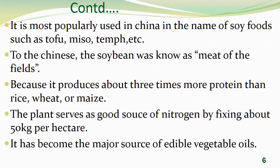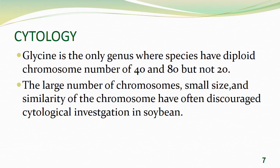Soybean has become a major source of edible vegetable oil. Coming to the cytology of Glycine max, it is the only genus where species have a diploid chromosome number of 40 and 80 but not 20. The large number of chromosomes, their small size and similarity have often discouraged cytological investigation in soybean.